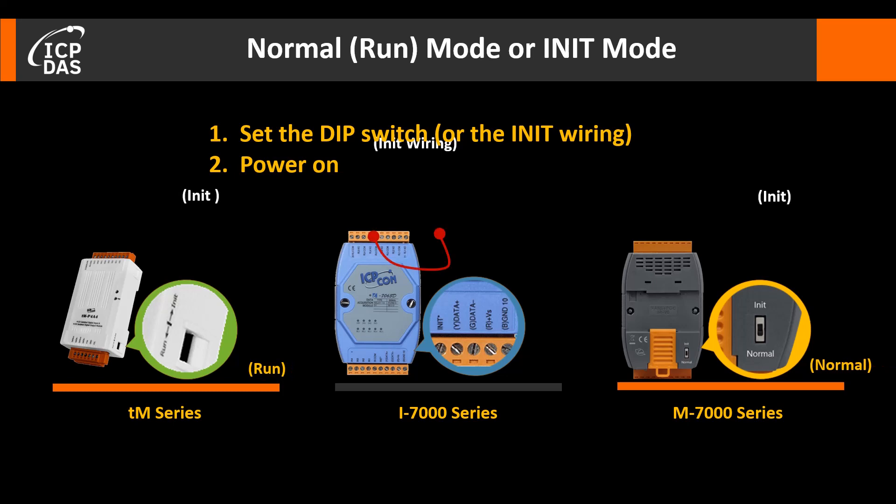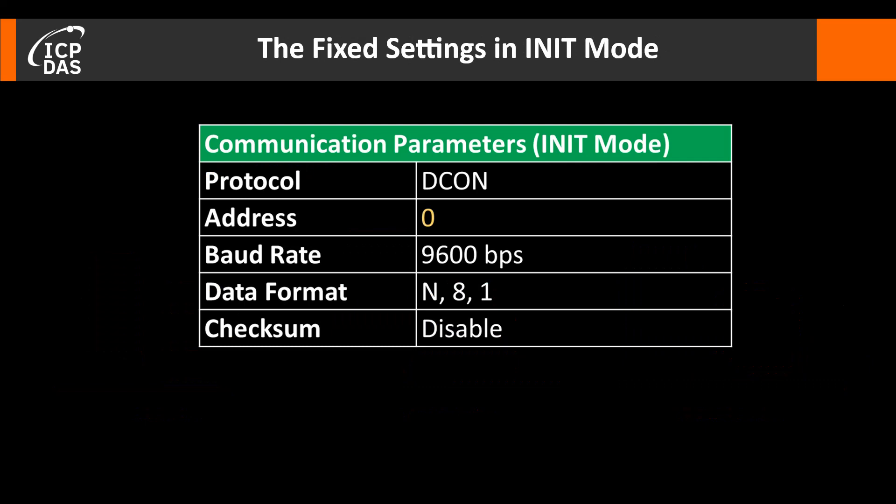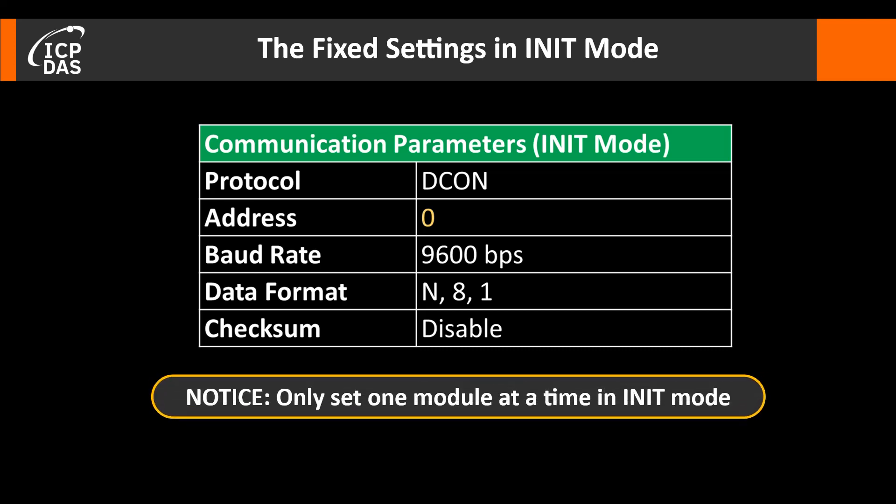By default the module is set to normal mode, and you can also change the setting in this way. In init mode, the address is always zero, which must be unique on the network, so users can only set one module at a time.